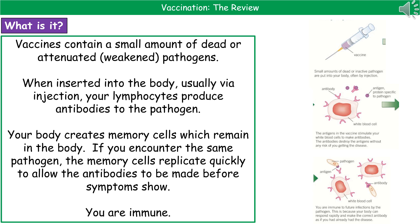Welcome to our review on vaccinations. First thing we need to know is what a vaccine actually is. When we're developing vaccines, we use a small amount of either a dead pathogen or an attenuated pathogen — attenuated just means it's been weakened, so it's not going to cause the full disease. When we insert that into the body, usually using an injection, the lymphocytes present within the body will produce antibodies to that pathogen.